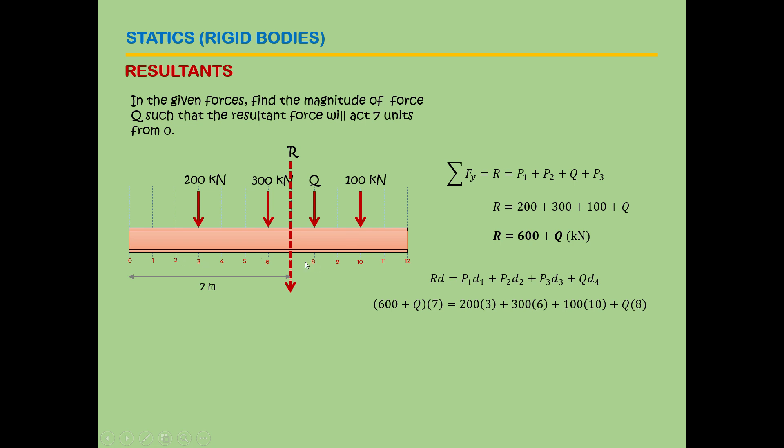So we only have one unknown here, which is Q. We can solve it by using shift. So in your calculator that would be 800 kilonewton. So it's that simple.